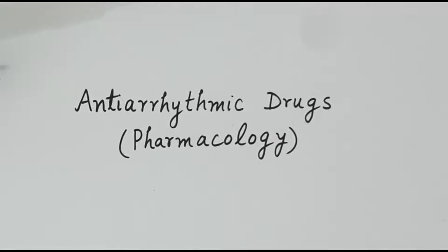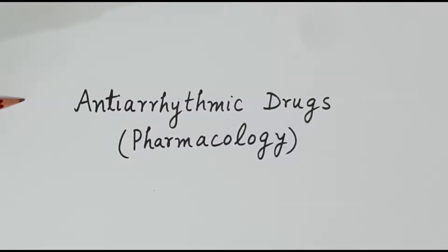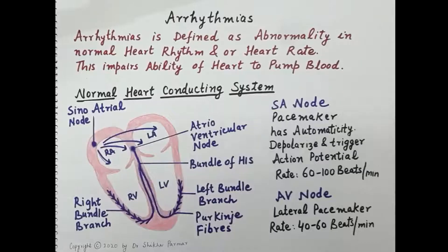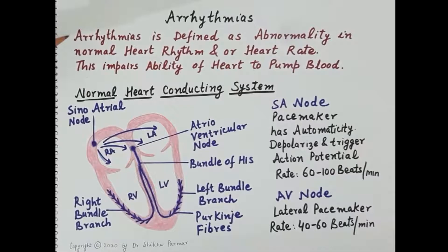Hello students. In today's session we will discuss pharmacology of anti-arrhythmic drugs. Before starting with the anti-arrhythmic drugs, we will first discuss in brief about what exactly is arrhythmia, then mechanisms and types of arrhythmias. As we all know, there are two types of myocardial cells: the nodal cells and the contractile cells. We will also review action potential of nodal cardiac cells and contractile cardiac cells. Arrhythmia is defined as abnormality in the normal heart rhythm or heart rate.